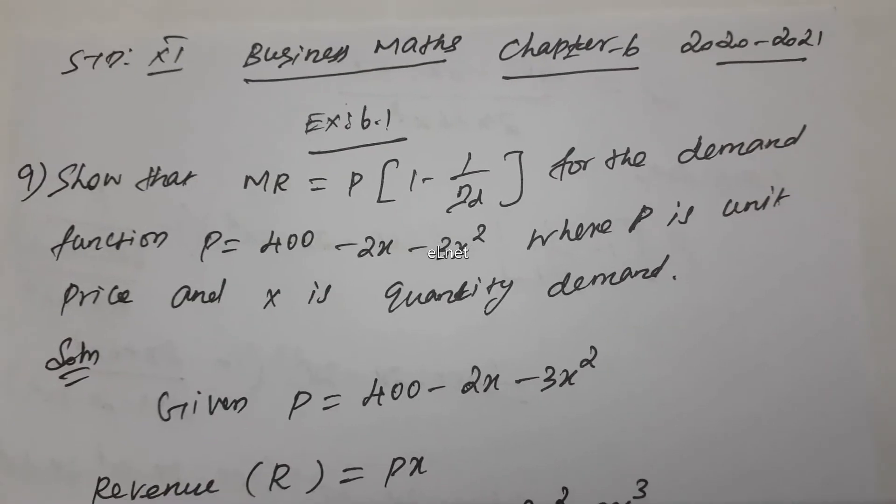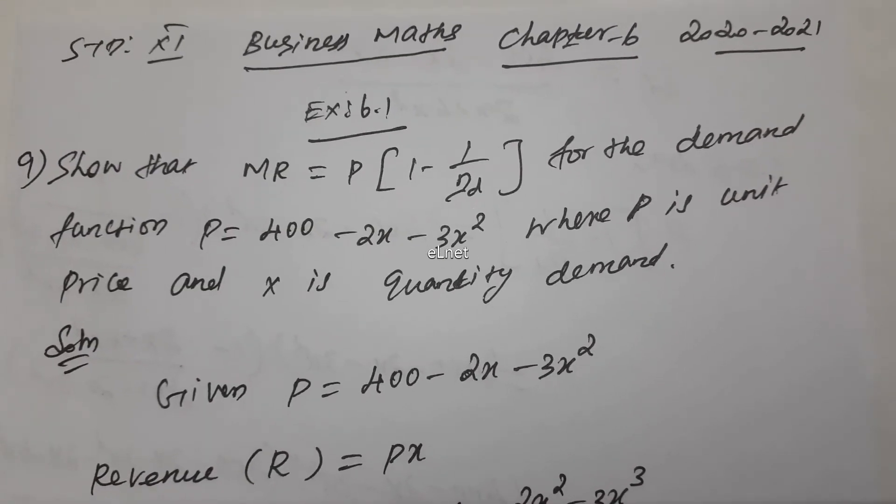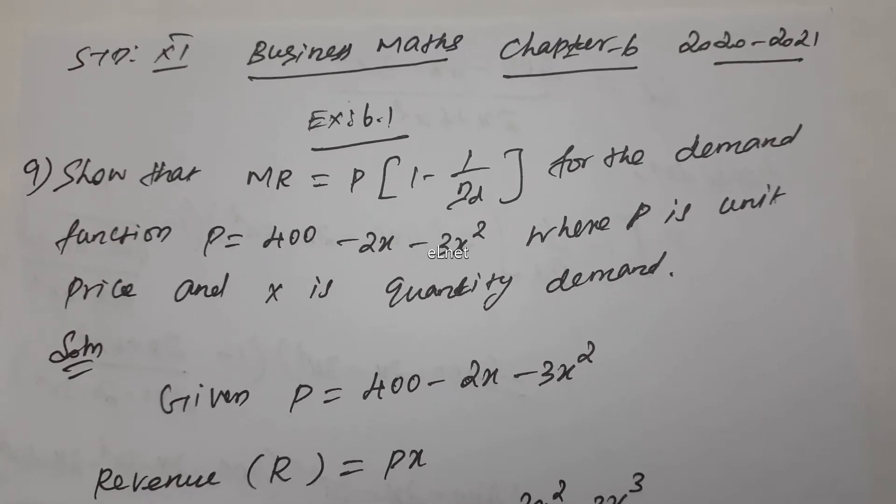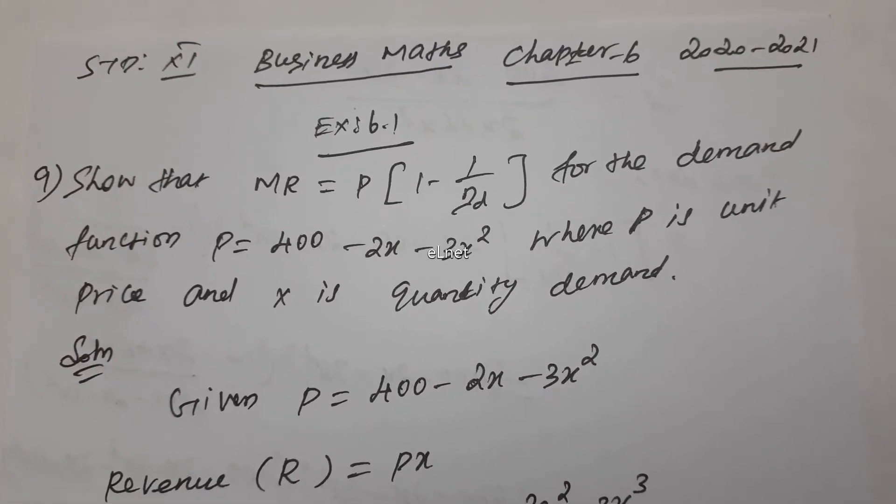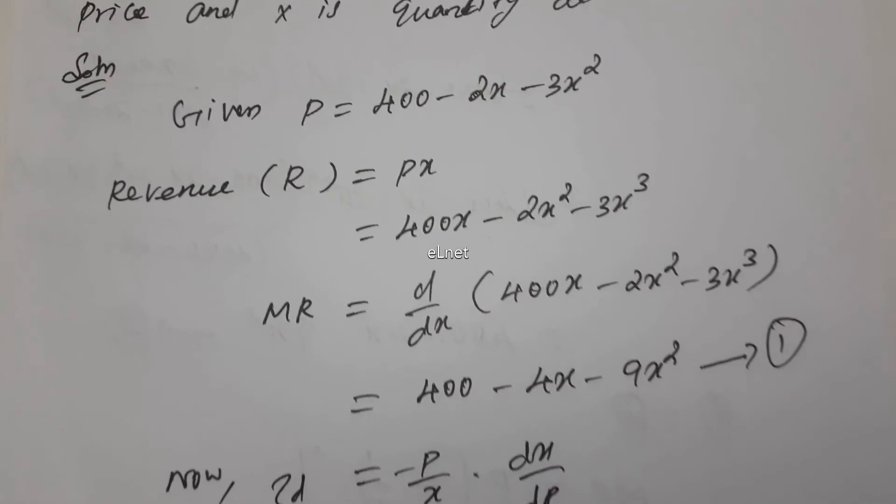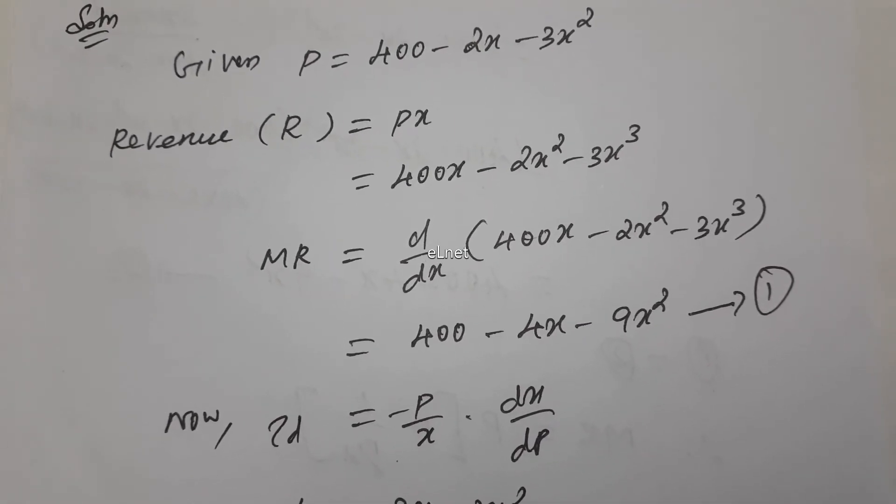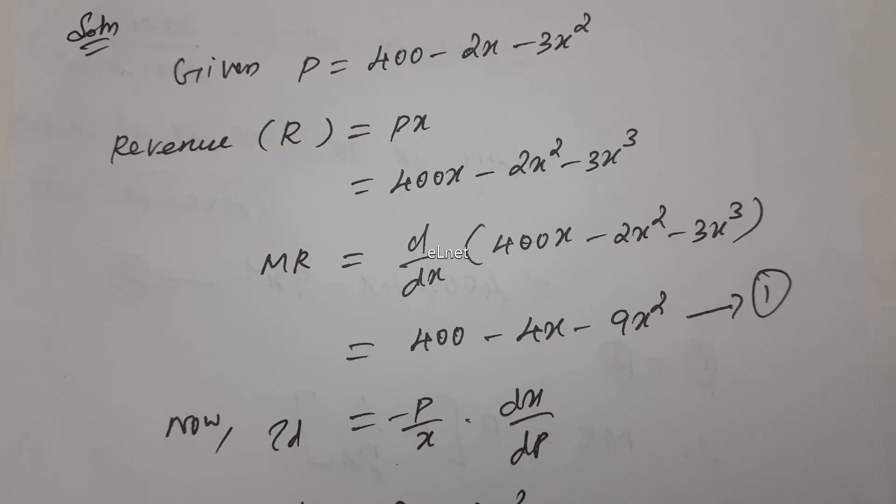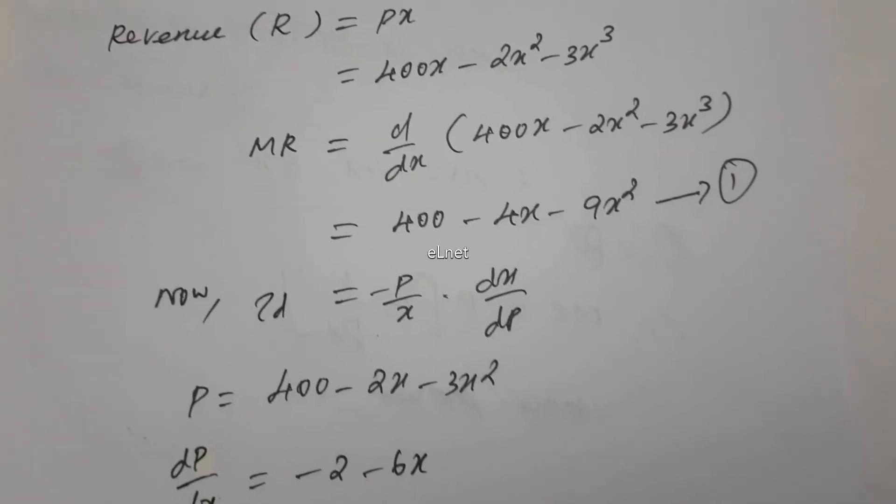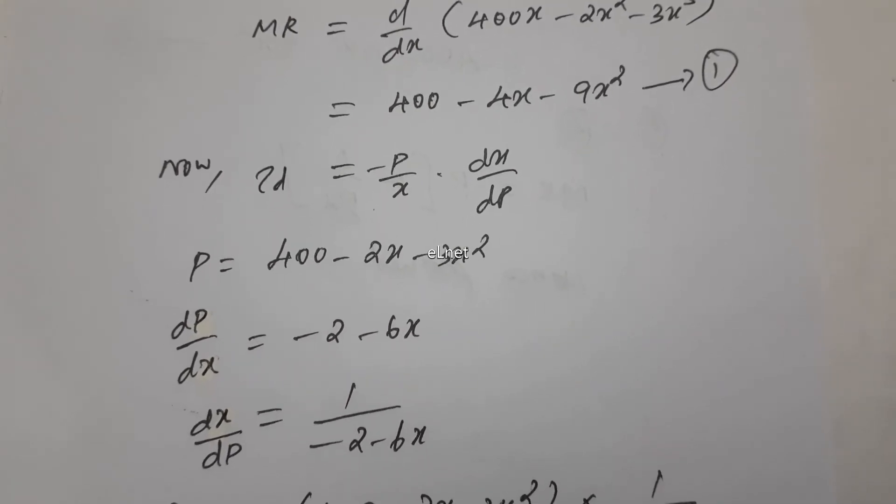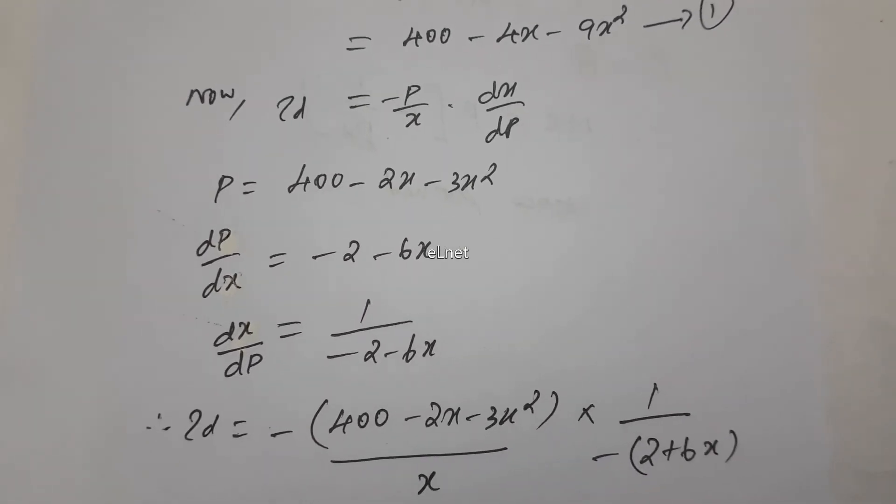Some parts are custom marks, very easy. Marginal Revenue find first, next eta D demand find, next P times 1 minus 1 by eta D. The Marginal Revenue and the value equal, that's the answer to the problem. Understood, students?